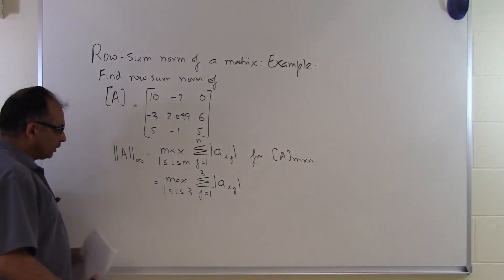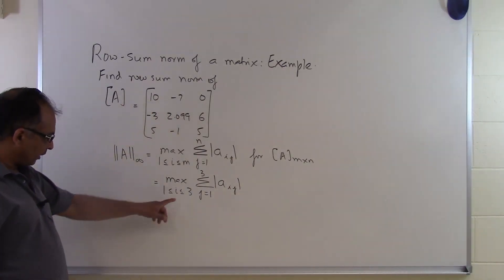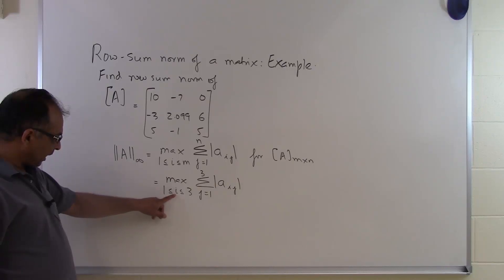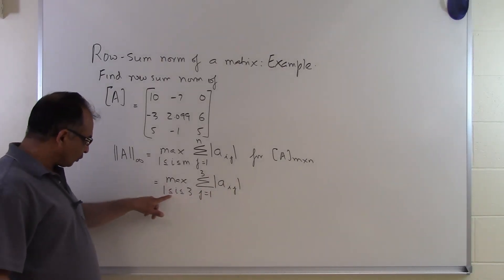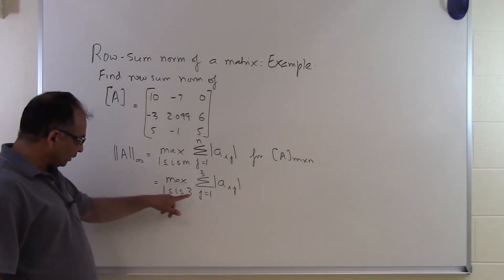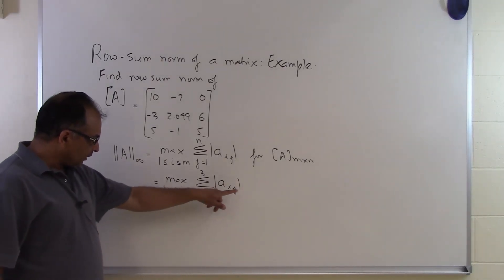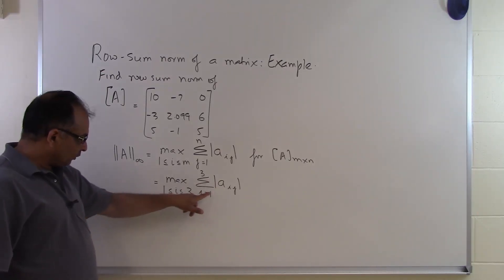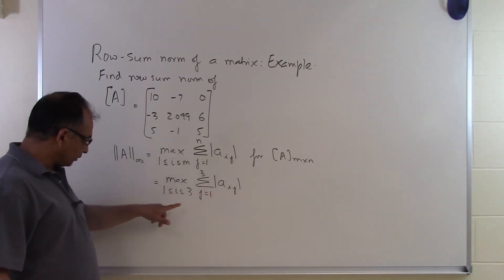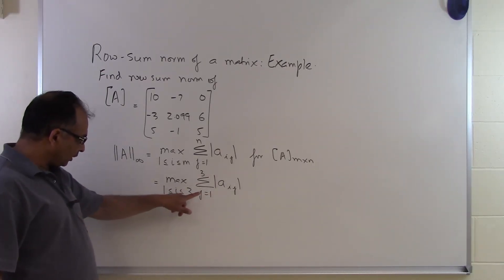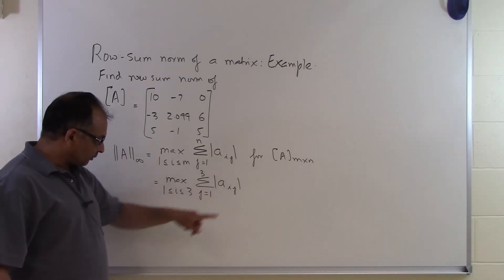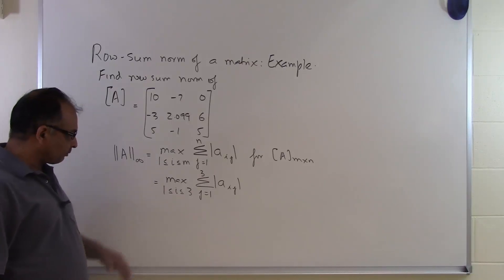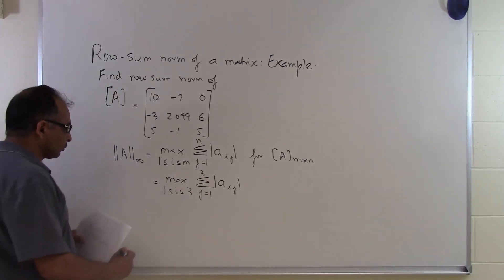What this basically means is that we are going to find the max of all these summations. We put i equal to 1 and find this summation, then put i equal to 2 and find this summation, then put i equal to 3 and find this summation. And then we take the maximum of all those.